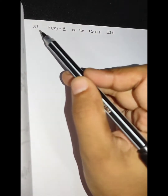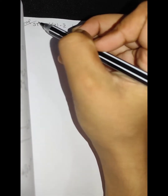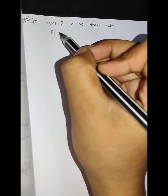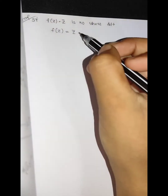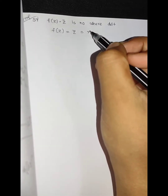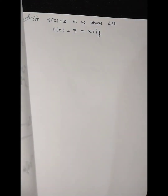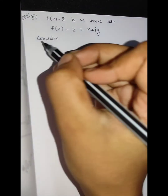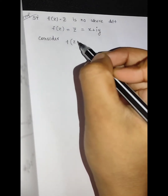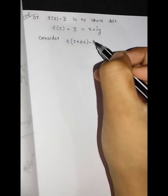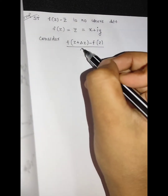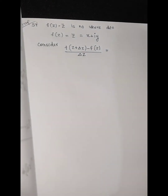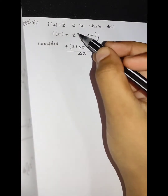This is important to show that f is nowhere differentiable. Let's look at this — what is f of z? This is z bar. z bar is x minus iy, and x plus iy. Let's consider. Let's look at our equation: f of z plus delta z minus f of z, divided by delta z. Now let's start. f of z is z bar.